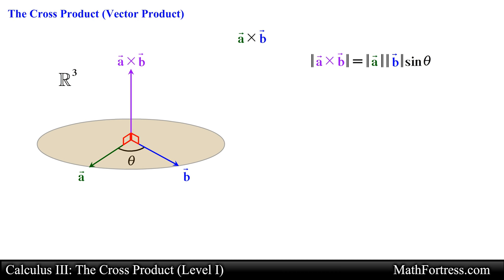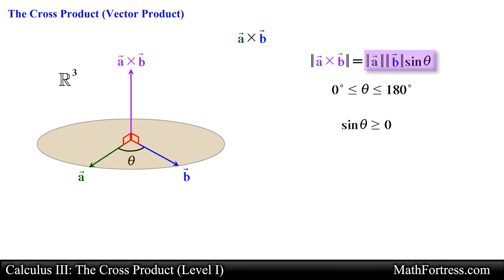We measure the angle theta from vector a toward vector b and take the smaller of the two possible angles. Similar to the dot product, theta ranges from 0 to 180 degrees. With the cross product defined this way, the value of sine of theta will always be greater than or equal to 0.